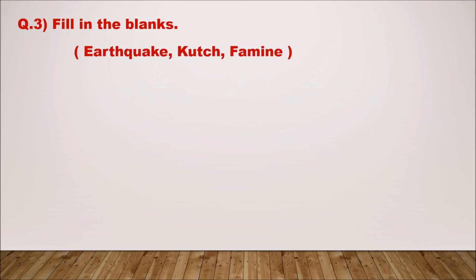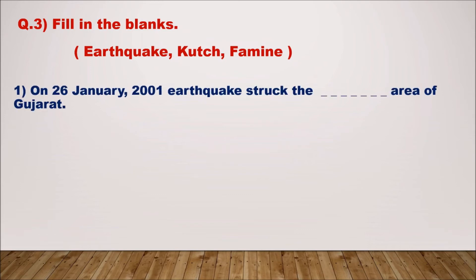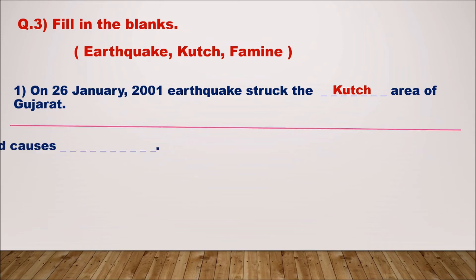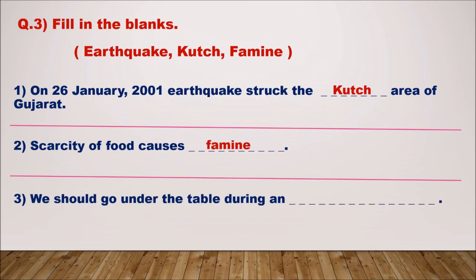Question three: fill in the blanks. Options are earthquake, Kutch, and famine. Number one: on 26th January 2001, earthquake struck the blank area of Gujarat — Kutch is the correct answer. Number two: scarcity of food causes blank — famine is the correct option. Number three: we should go under a table during an earthquake — earthquake is the correct option.